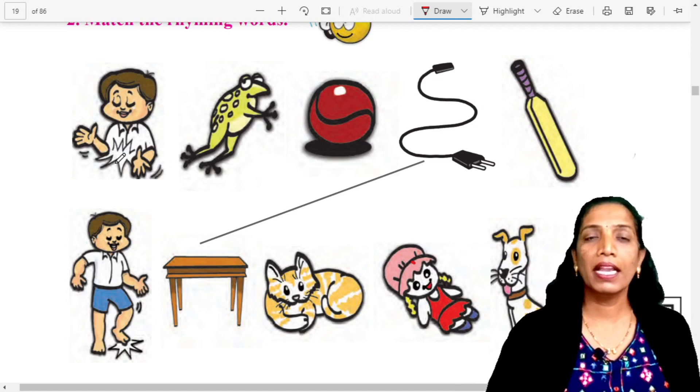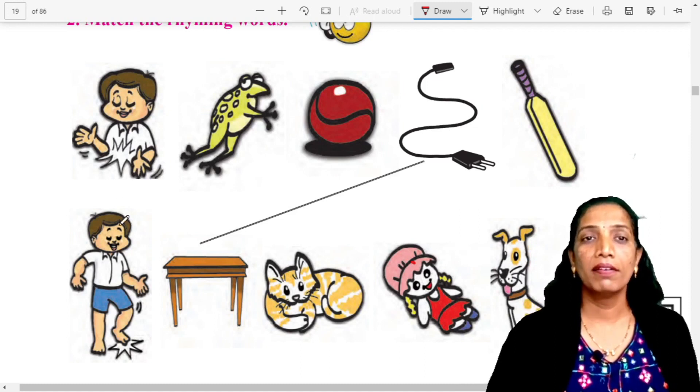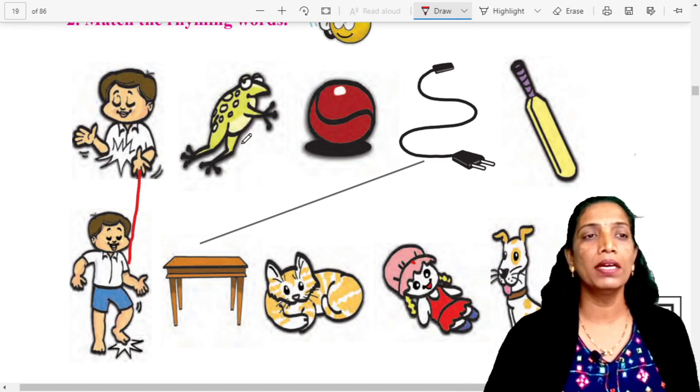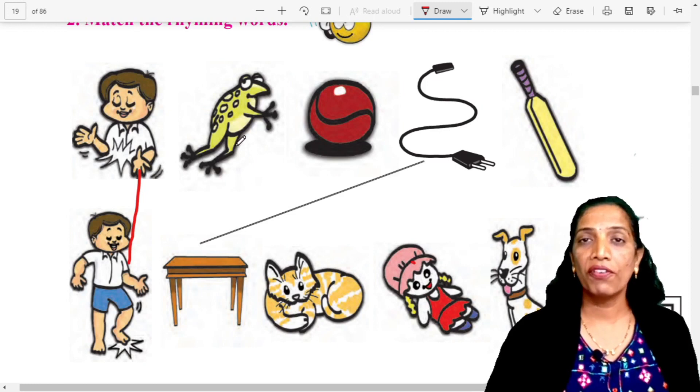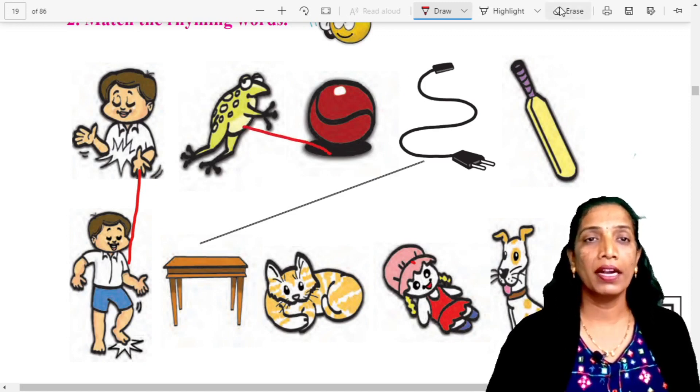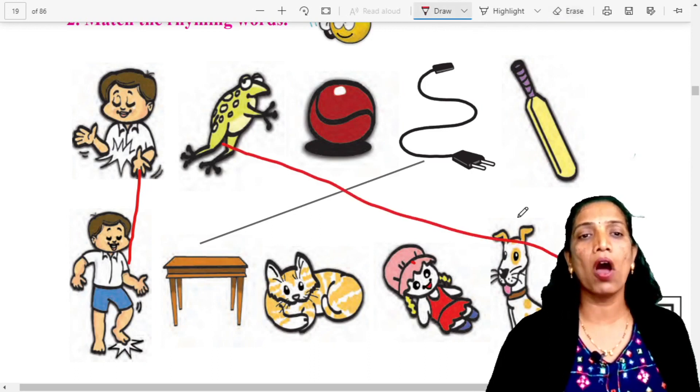Clap. Clap. Very good. Tap. Picture match. Clap, tap. Very good. This is frog. Frog. Table, cat, doll. Dog. Dog. Very good. Frog. And dog. Match. Frog, dog.